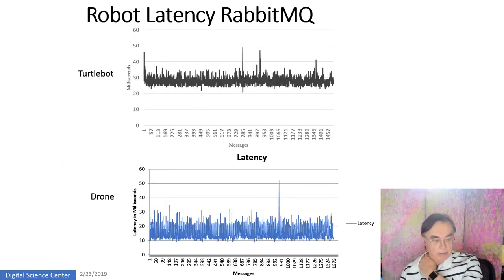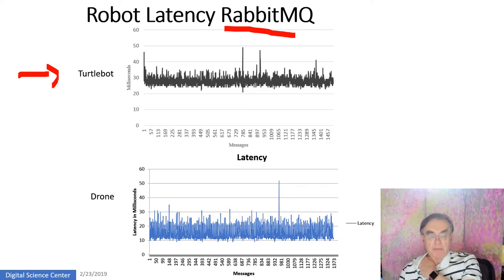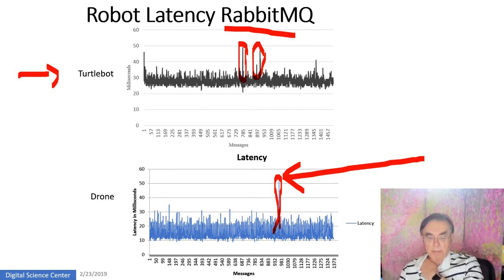This last slide shows RabbitMQ operational latency for the Turtlebot. Note that the cloud is very near the device — both are at Indiana University — so this is just the processing time in Storm and the gateways. There are a few issues with excessive latency spikes: almost everything can cause latency — your cloud can be asleep, you can have garbage collection in Java, and so on. These spikes must be controlled because in real-time applications, latency must be limited to an acceptable level — maybe 50 milliseconds is acceptable.